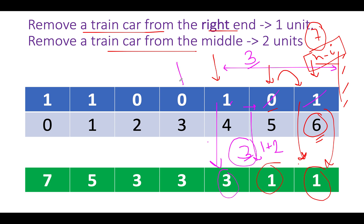Next we see a 0, so we copy the right value — 3 gets set here. Again a 0, so 3 gets set again.